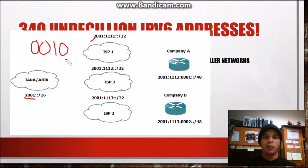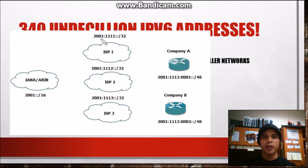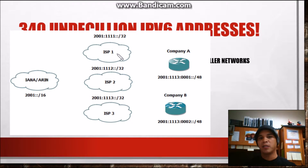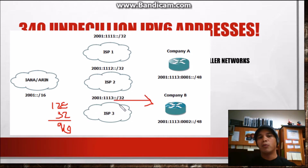In hex, it goes all the way from 0 to F. F means all 4 bits are turned on, which adds up to 15. That's where we get the slash 32 prefix, because each hex-tet equals 16 bits. IANA hands out a slash 32 prefix to an ISP — ISP 1 through 3 each get a slash 32 prefix. The ISP can do whatever they want with the remaining 96 bits (128 minus 32 = 96 bits for host).